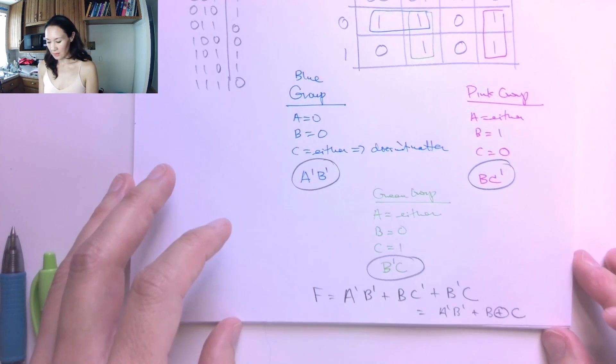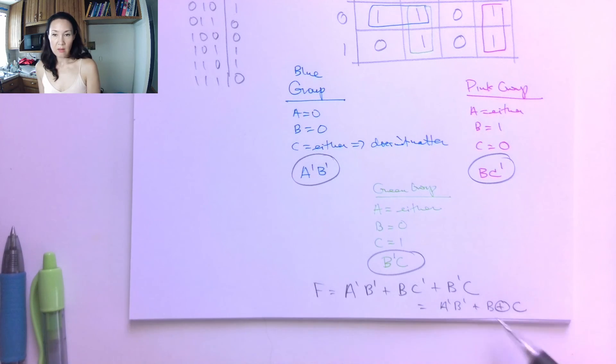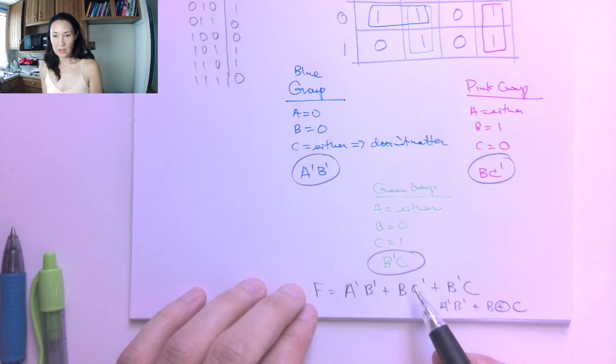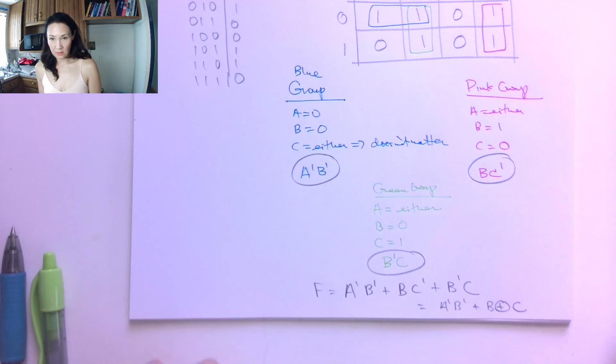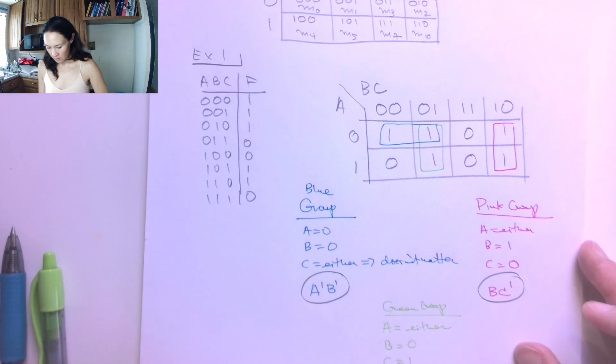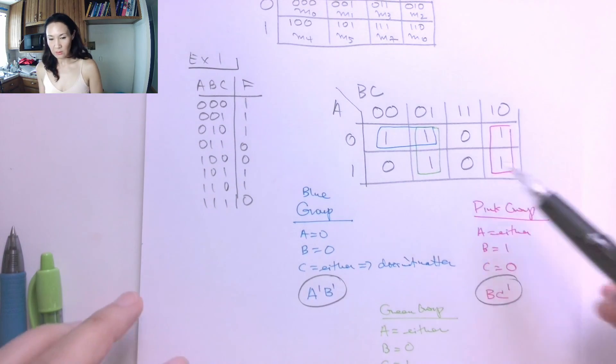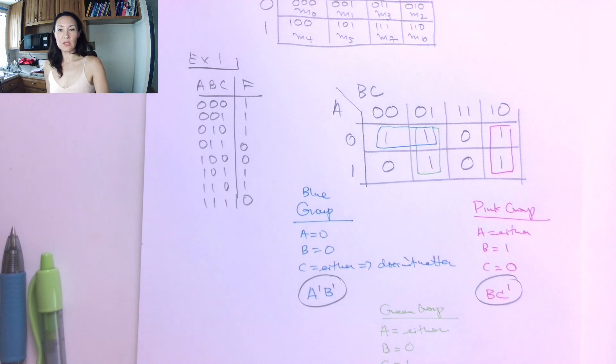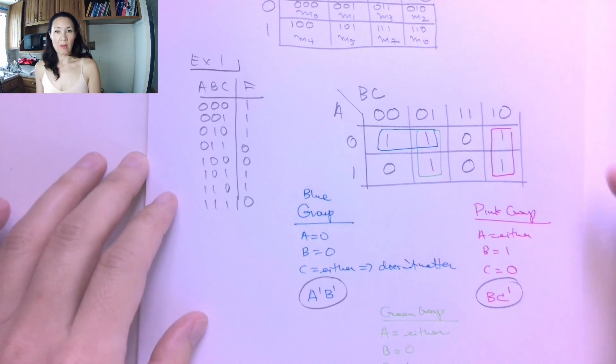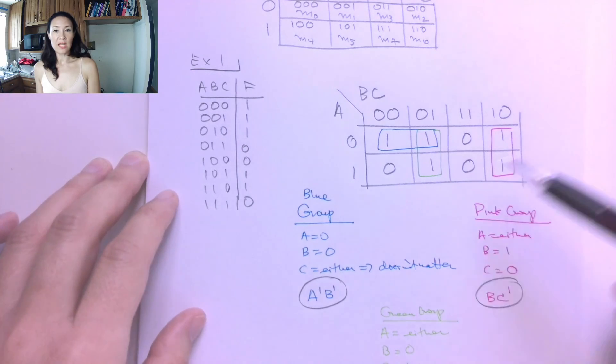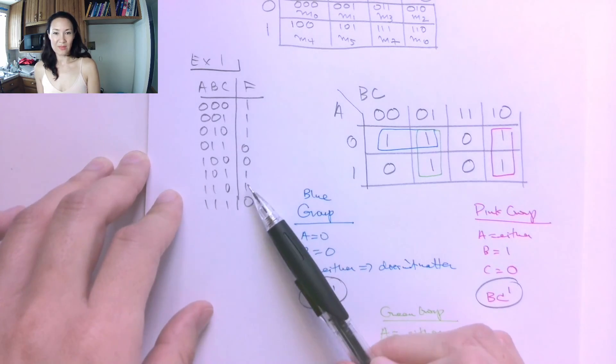But it depends on your design constraints. If you are asked to not make your function with any xors and just implement it with ands and ors and inverters, then this would be your bogey. So let me show you in the next video an example of how to make a truth table from the min term and max term representations. Let me know if you have any questions about making a three input truth table and a three input Karnaugh map from the truth table.